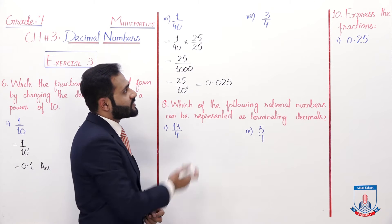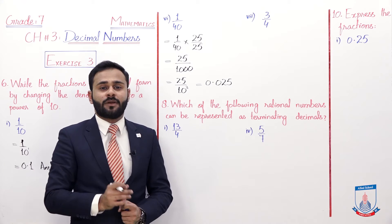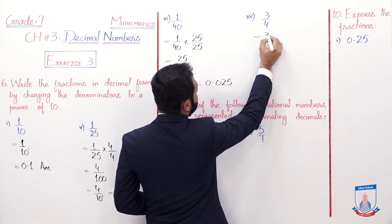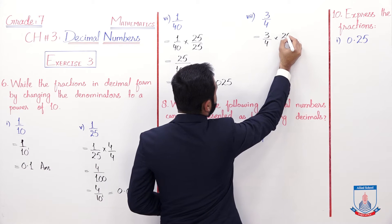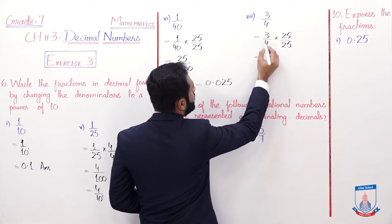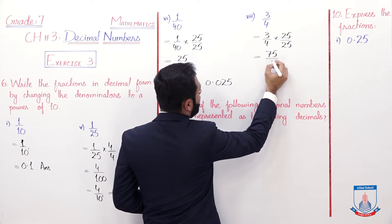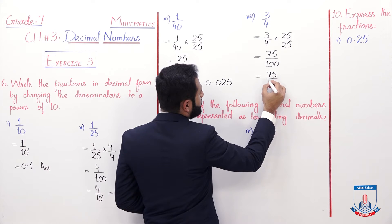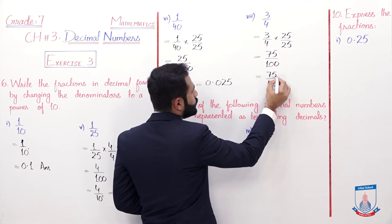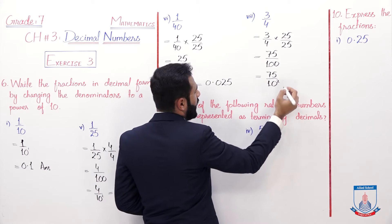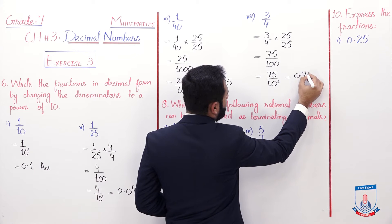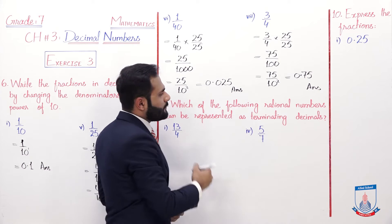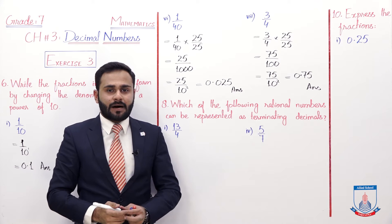Similarly, 3 by 4. Yahaan par bhi denominator ko 10 ki power mein lekar aana hai. We multiply and divide by 25: 3 into 25 becomes 75 and 4 into 25 becomes 100, which is 10 ki power 2. So 2 digits peeche - it becomes 0.75. This is the decimal form of this fraction.